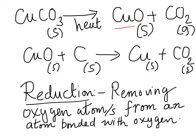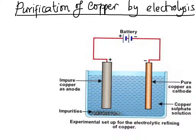At this point, it's important to introduce the concept of reduction, which simply means removing oxygen atoms from a compound. For example, copper oxide is a compound where copper is bonded with oxygen — by removing that oxygen you are reducing the copper oxide to copper. The type of chemical reaction where an oxygen atom is removed from an element in a compound is called reduction.